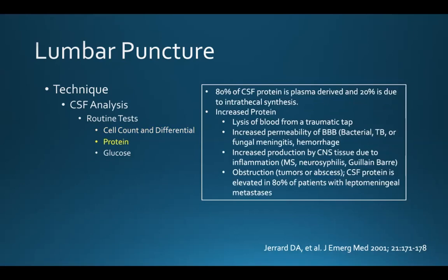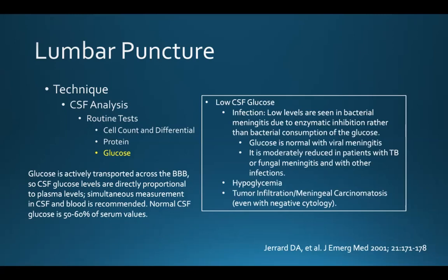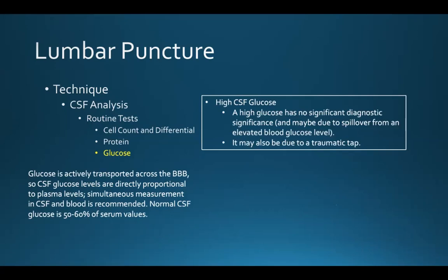When looking at CSF protein, 80% is plasma-derived and 20% is due to intrathecal synthesis. Increased protein may be due to lysis of blood from a traumatic tap, increased permeability of the blood-brain barrier such as with hemorrhage or meningitis, increased production by CNS tissue due to inflammation, or obstruction due to a tumor or abscess. CSF protein is elevated in 80% of patients with leptomeningeal metastases. Glucose is actively transported across the blood-brain barrier, so CSF glucose levels are directly proportional to plasma levels — simultaneous measurement in CSF and blood is recommended. Normal CSF glucose is 50 to 60% of serum values. Low CSF glucose can be seen in infections, hypoglycemia, and tumor infiltration. High CSF glucose levels have no significant diagnostic significance and are usually due to an elevated blood glucose level, but can also be seen in a traumatic tap.